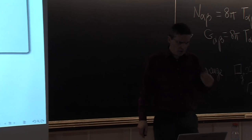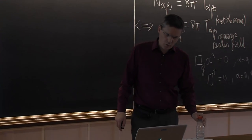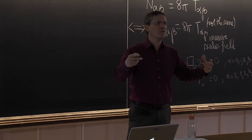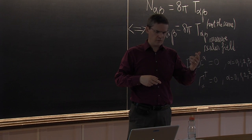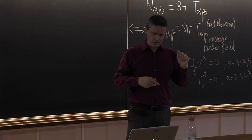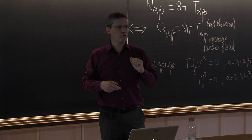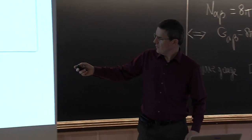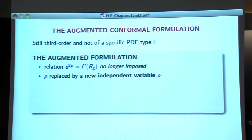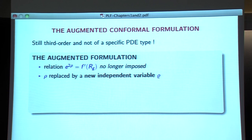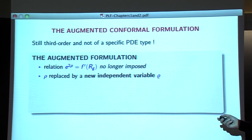The augmented formulation: the relation e^ρ = F'(R) will no longer be imposed. It's a rather complicated nonlinear connection, so we would like to get rid of it in some way. We don't impose that anymore. To emphasize this fact, I'm going to replace ρ with a different notation — it is now an independent variable. We proceed with this reduction: we started with a metric, which we replaced by the DAG metric by conformal transformation.